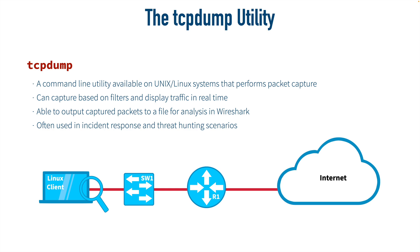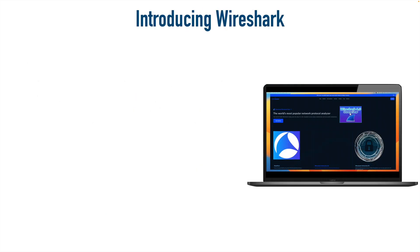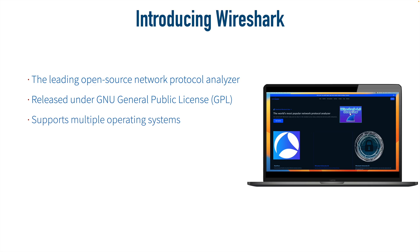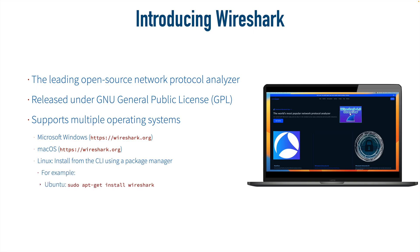From a cybersecurity perspective, tcpdump is useful for gathering information quickly during security incident response and for threat hunting scenarios. Wireshark is a popular network protocol analyzer, freely available and supported on almost any operating system — downloadable for Windows, macOS, or installable via Linux package manager on distributions like Ubuntu and Red Hat Enterprise Linux. Wireshark's three primary tasks are: capturing traffic, displaying captured packets, and allowing you to filter and analyze the capture.